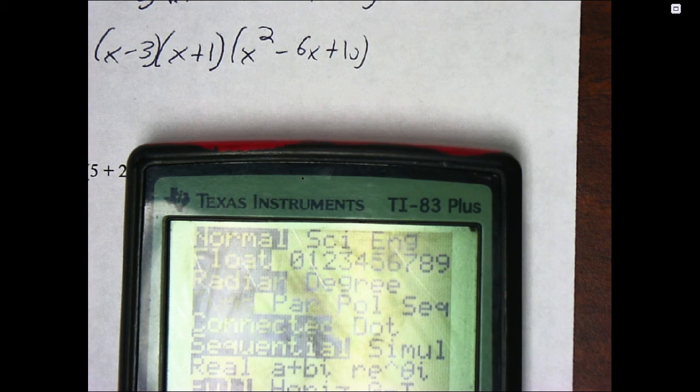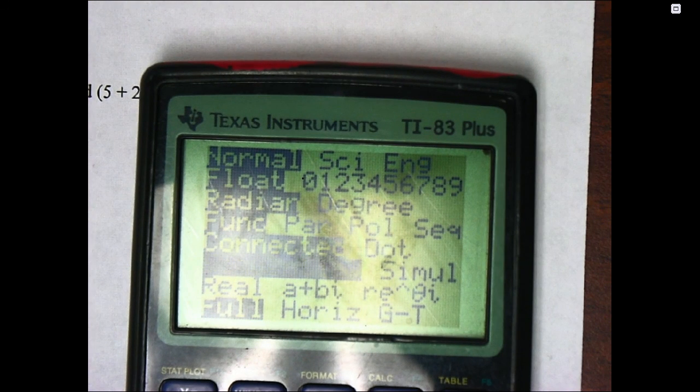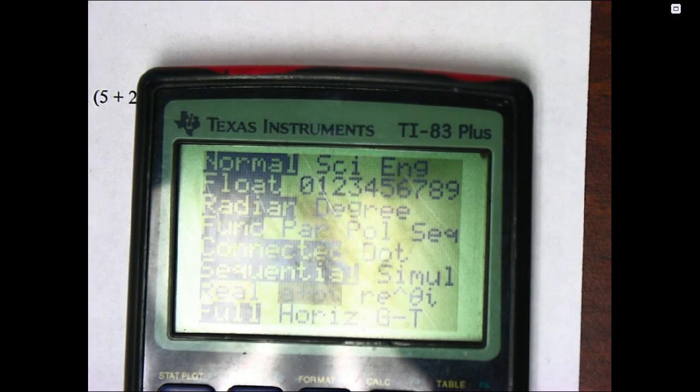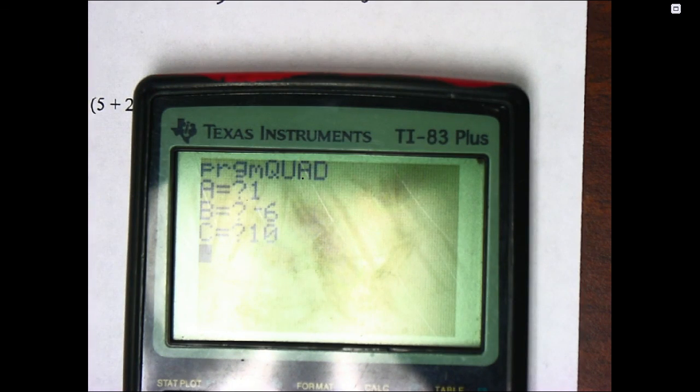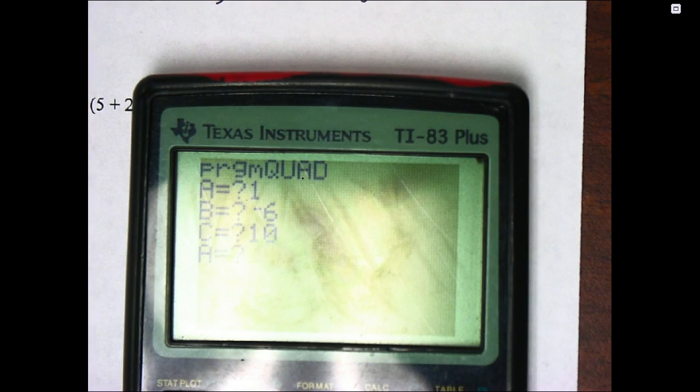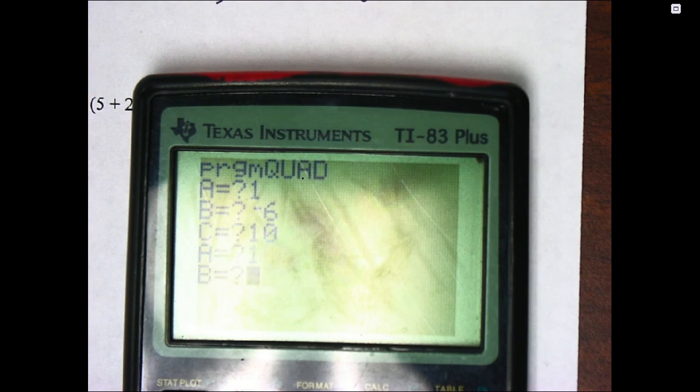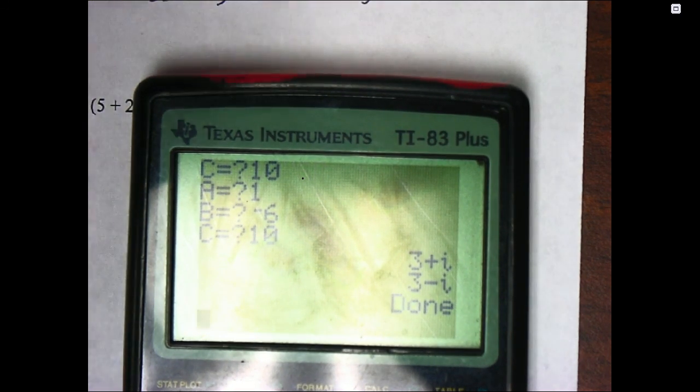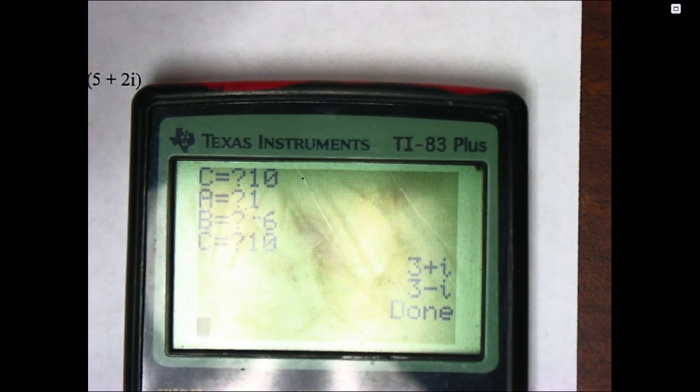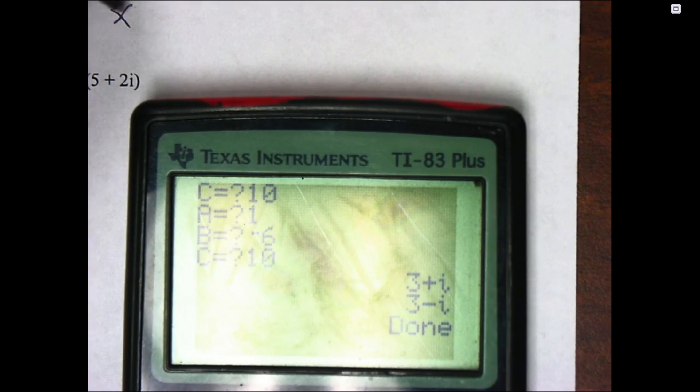And so when I go to my mode here, for some reason mine is just turned off. Yours might be in real mode. We want to be in this A plus B I mode. So I'm going to run the quadratic formula program again and type in the same numbers. And now it kicks out the answers.